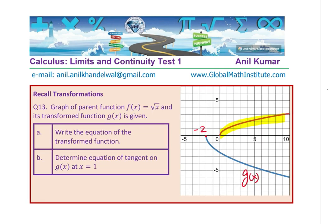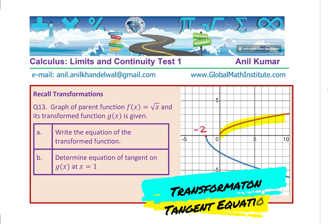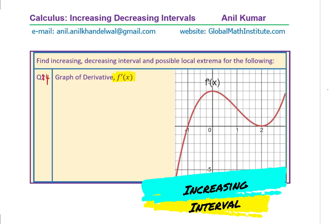Then we are looking at transformation of functions — you find the equation of the transformed function shown as g of x. Then you need to find the equation of the tangent line. Equation number 14 is to find the increasing and decreasing intervals and possible local extrema from the graph of the derivative. So you are given the graph of the derivative and you need to find increasing, decreasing intervals and possible local extrema on the function.